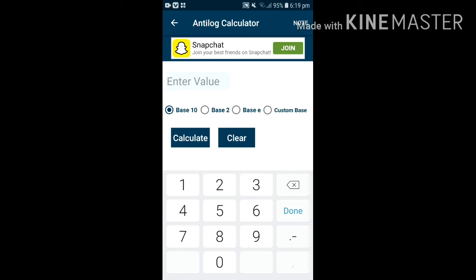So here the value is 1.2508. We will find the antilog for base 10.